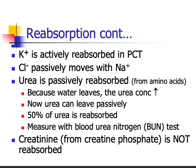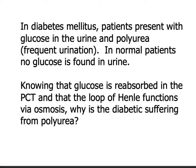Here's a problem to work on: a patient with diabetes presents with glucose in the urine and polyuria — frequent urination. In normal healthy patients without diabetes, you would not have glucose in the urine. Using this knowledge, explain why it makes sense that you have frequent urination when you're diabetic. Pause the video and work through it before we discuss.